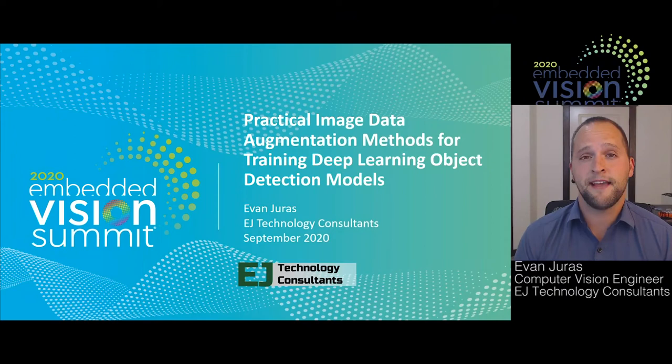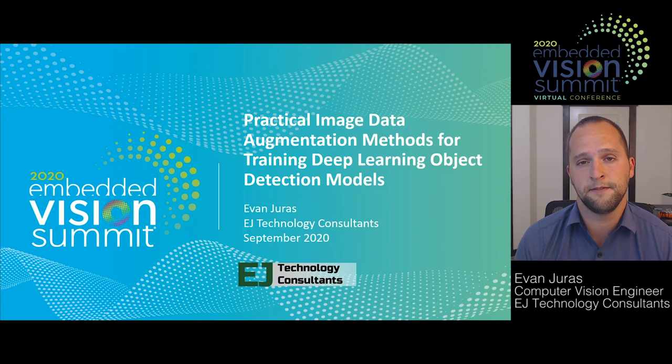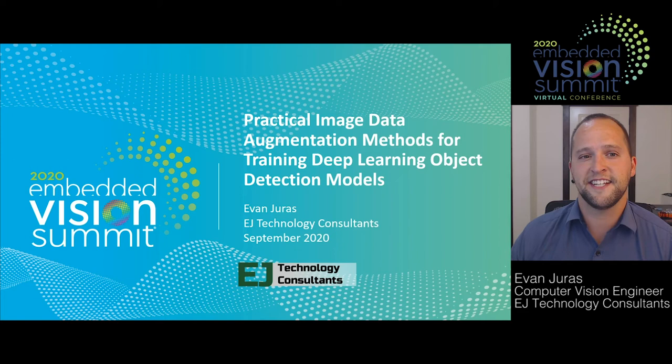Hi everyone, my name is Evan Juris and I'm a computer vision engineer at my own consulting firm, EJ Technology Consultants. I have a background in hardware engineering, but over the past few years I've gotten to work on several fun and interesting computer vision projects and learned a lot in the field. I love helping people solve computer vision problems and teaching people about different topics related to computer vision. I'm happy to be here today to talk about practical image data augmentation methods for training deep learning object detection models. Let's get started.